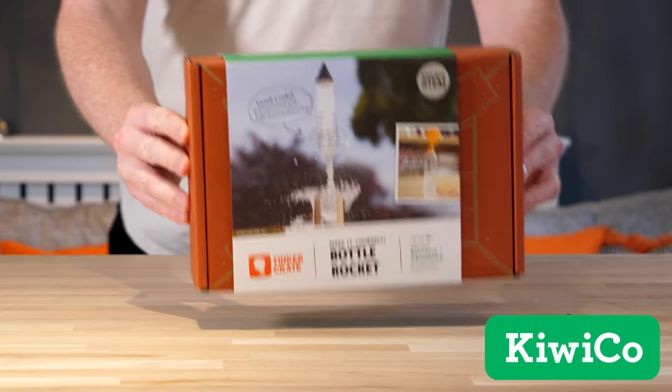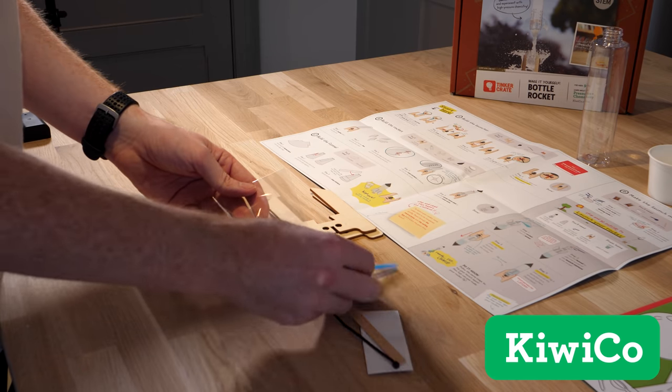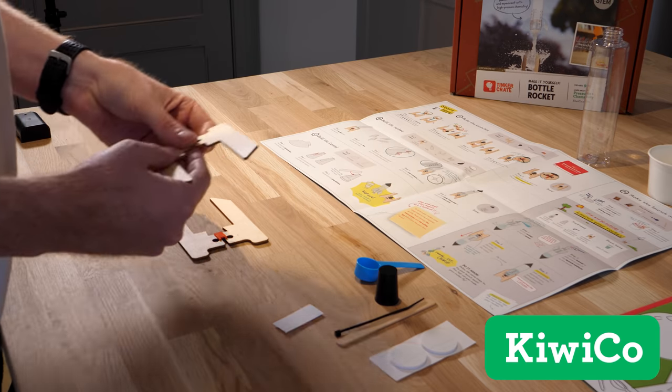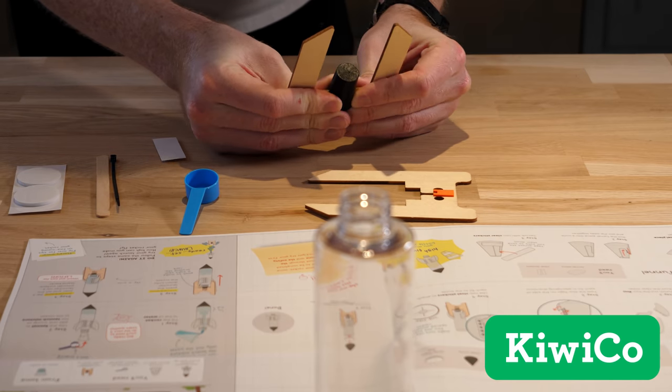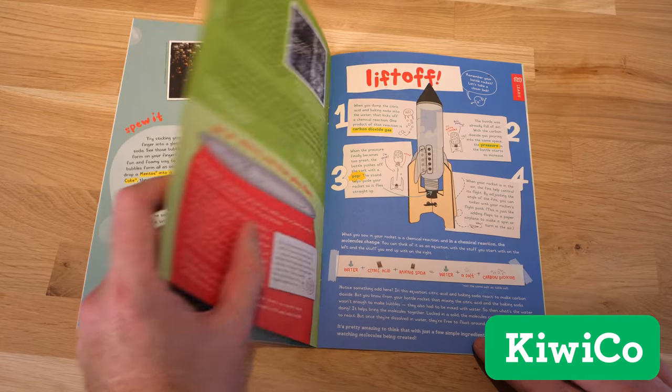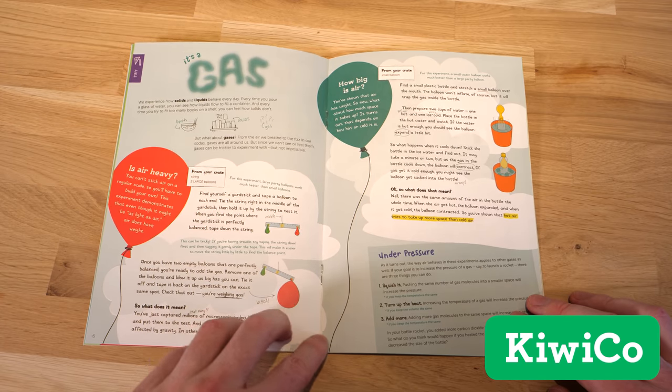KiwiCo creates super cool hands-on projects designed to expose kids to concepts in science, technology, engineering, art and math, and are a great resource for learning at home. Each monthly crate is very well designed, with an easy to follow instruction manual and educational magazine, which I personally really like as building something is only half the fun. Finding out how it works can be just as fun, if not more.